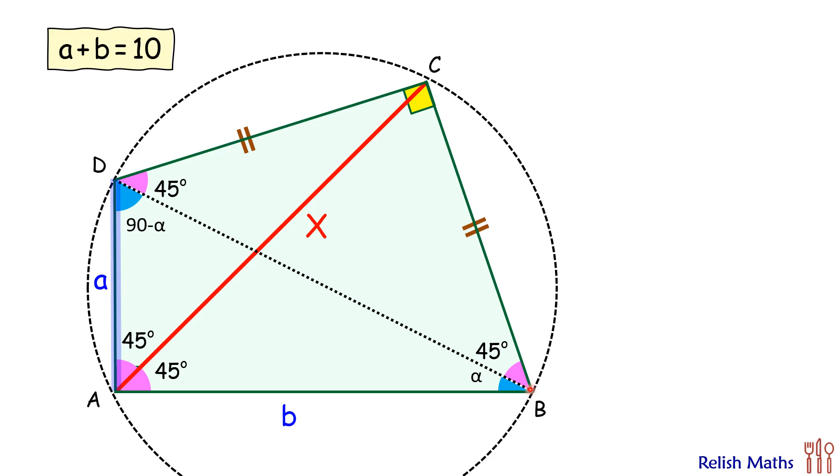Also, if we look at the chord DA, this chord is sustaining an angle of alpha degrees at point B, so at the remaining segment also it will sustain an alpha angle. So we can say DCA, or this angle C here, is alpha degrees. But this full angle is 90, so this remaining angle will be 90 minus alpha.